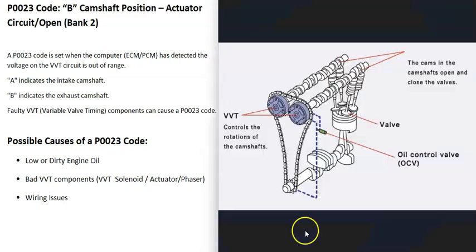Modern vehicles have what's called variable valve timing, which is a good system. It can help a vehicle get better gas mileage, improve horsepower at different RPMs, help the vehicle get better emissions, and things along these lines.